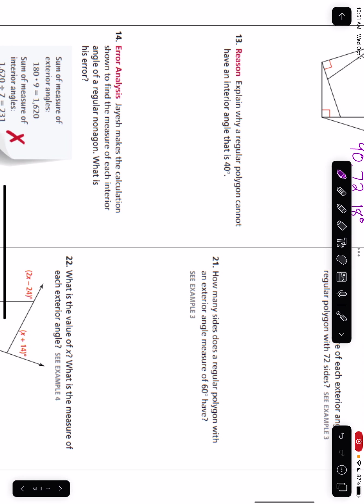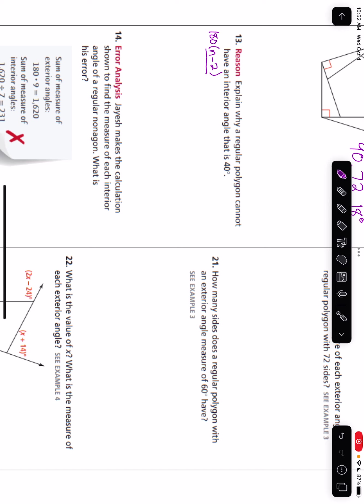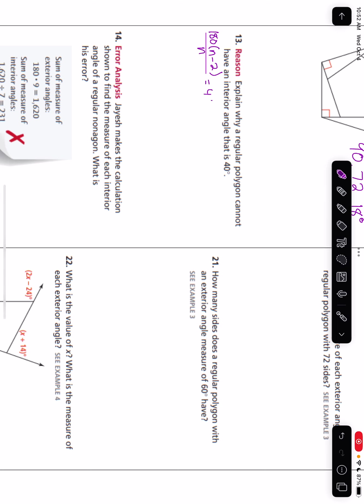Number 13: explain why a regular polygon cannot have an interior angle that is 40 degrees. In order to do this, we'll use the formula for finding the measure of an interior angle of a regular polygon, which is 180 times (n minus 2) over n, over the number of sides in the shape, which in this case would be 40. So we've got to see why this doesn't work.